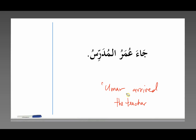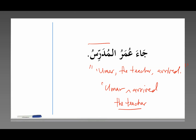What's happening is we're adding this word — the teacher — to the sentence. In other words: Umar, the teacher, arrived. We're still talking about Umar when we say the teacher, but we're adding a little bit more information about him. That's the role of المدرس in this sentence: Umar, the teacher, arrived. Umar is the teacher — we're just saying a little bit more information about him.